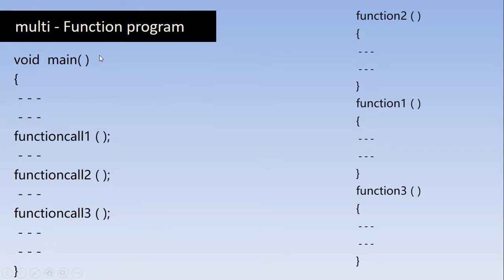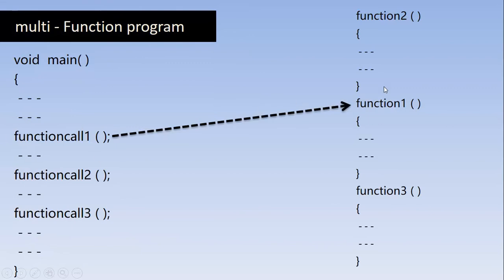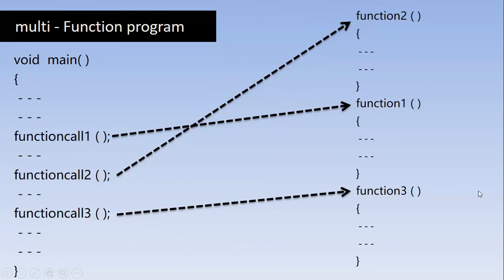We can also have multi-function programs — more than one function, as demonstrated here. Function call one, function call two, and function call three correspond to three independent function definitions. The main function contains only the function calls. Function call one is executed and control passes to function one's definition, then returns; similarly for function two and function three.